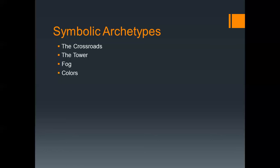Here are a few more symbolic archetypes. The crossroads is a time or place of decision when a realization is made and change or penance results. The tower represents a strong place of evil and also the isolation of self — think of Rapunzel locked in the tower. Fog symbolizes uncertainty. Colors usually mean something in stories: red means blood, sacrifice, passion, or disorder; green represents growth, hope, and fertility; white represents light, purity, and innocence; and yellow represents enlightenment or wisdom.